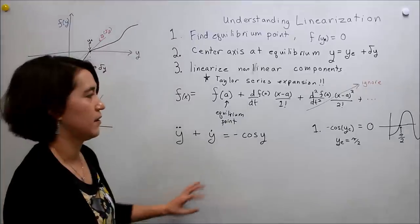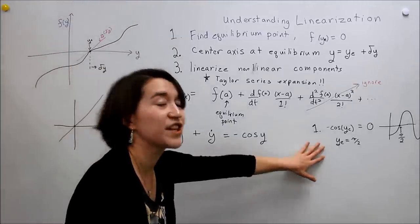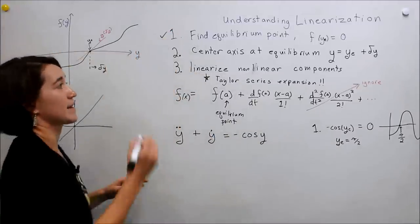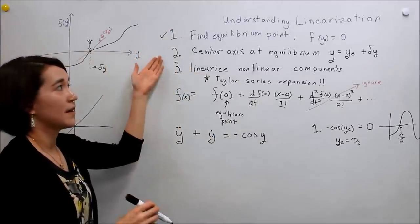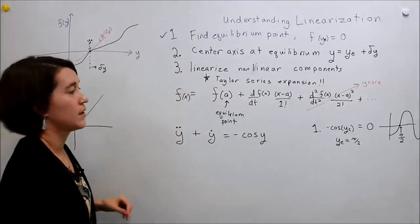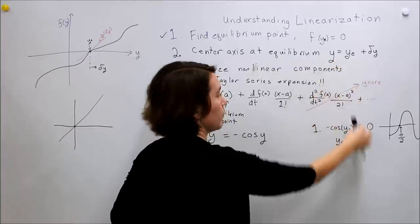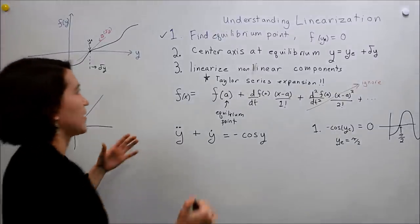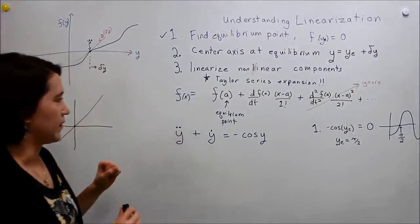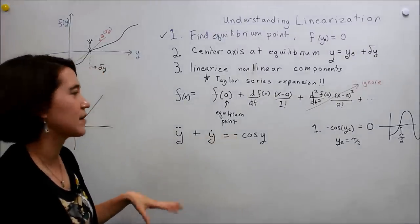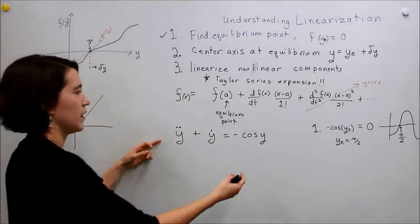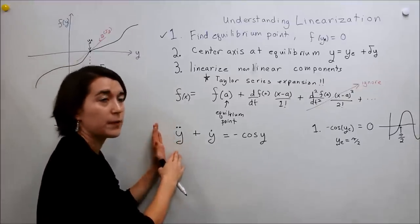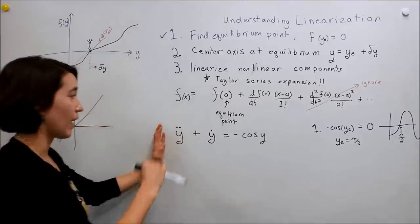So we're going to linearize around this point y_e = π/2 — we found the equilibrium point. Next we need to center around the equilibrium point. Looking back at our equation, there are two different sides. Let's look at each side independently. We can see that the derivative components on the left side are already linear.